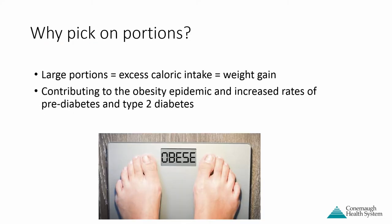Why are we picking on portions? In general, our large portions are contributing to excess calorie intake. All those extra calories chalk up to extra weight gain, contributing to the obesity epidemic and increased rates of pre-diabetes and type 2 diabetes. CDC analysis indicates that if current trends continue by 2030, one in three people are predicted to have diabetes. Currently, one in ten have diabetes and one in three have pre-diabetes.